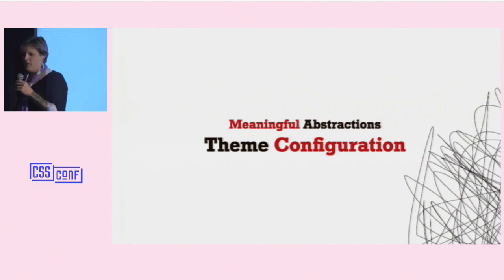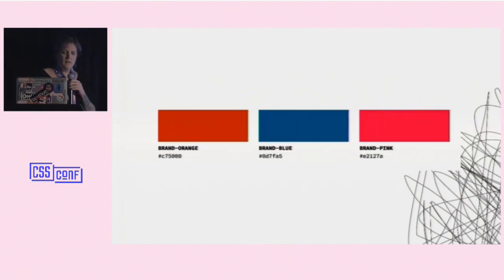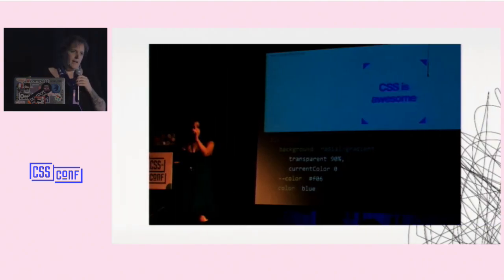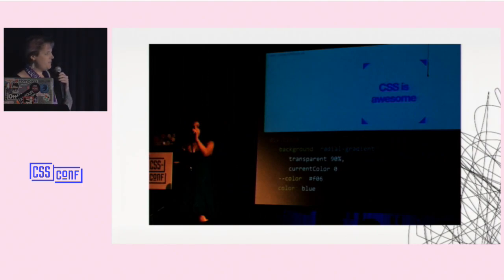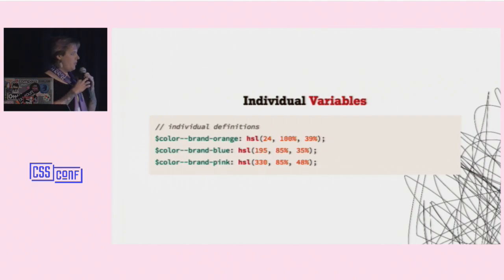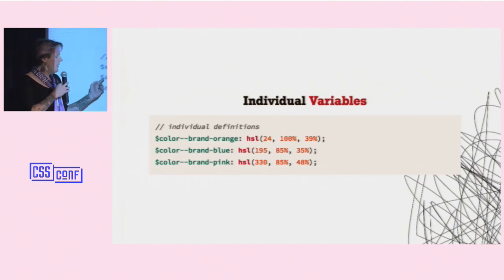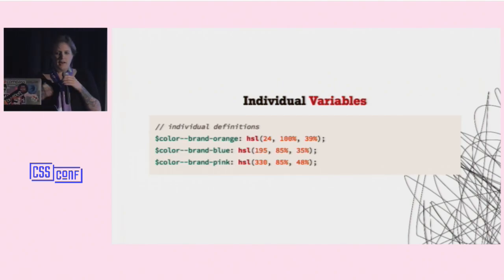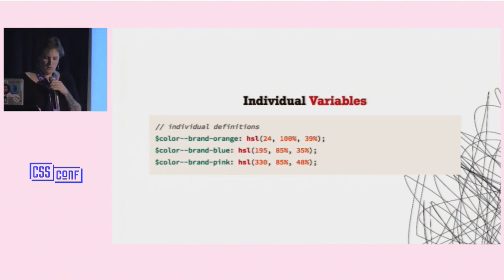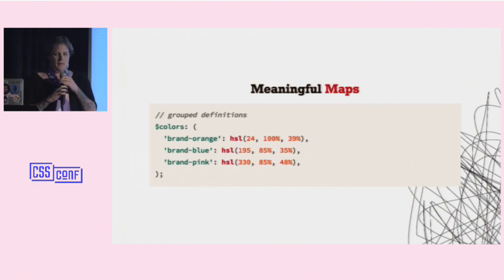So the first thing we'll look at is theme configuration. This is one thing that I use SASS Maps for quite a bit. I need this. I need a brand color palette. So how am I going to represent that in my code? I wish I could use these variables. That's not what I'm going to do. But here's sort of the old system. Individual variables for each color, and maybe some naming system to say that they're all colors. These are brand colors, and then individual ones. So that's a fine system, and I can access those pretty easily. I can just call the variable.